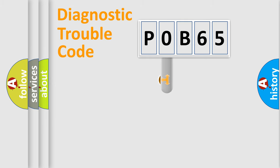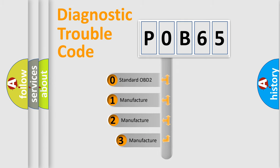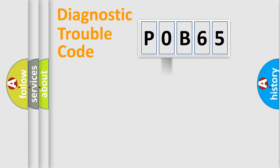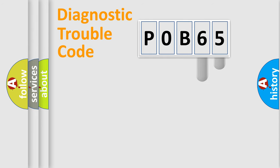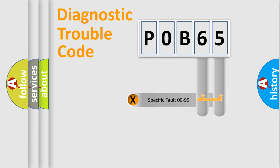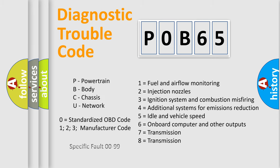This distribution is defined in the first character of the code. If the second character is expressed as zero, it is a standardized error. In the case of numbers 1, 2, or 3, it is a manufacturer-specific error. The third character specifies a subset of errors, and this distribution is valid only for the standardized DTC code. Only the last two characters define the specific fault of the group.